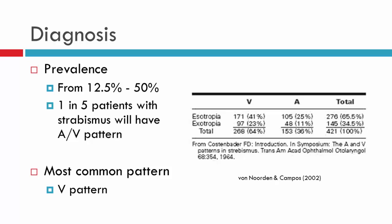In terms of prevalence, depending on the study, it is indicated to be between 12.5% to 50% of patients who may have an alphabet pattern, or one in five patients with strabismus will have an AV pattern.